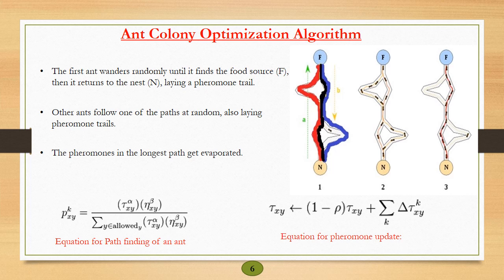The first equation shows probability of k-th ant to travel from x to y, where τxy is the concentration of pheromone level and ηxy is the probability of selection of the path. The second equation shows pheromone update, where τxy is the concentration of pheromone, one is the maximum probability, ρ is coefficient of evaporation, and Δτxy is the change in pheromone concentration.